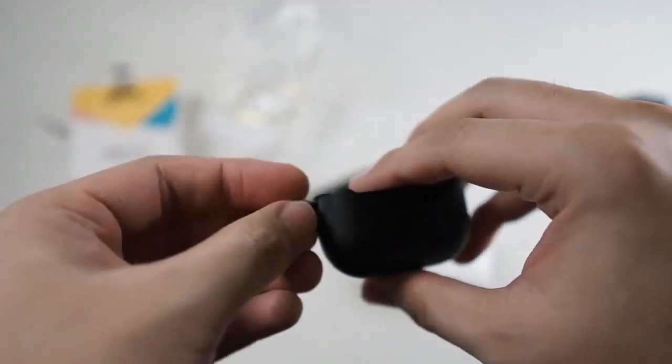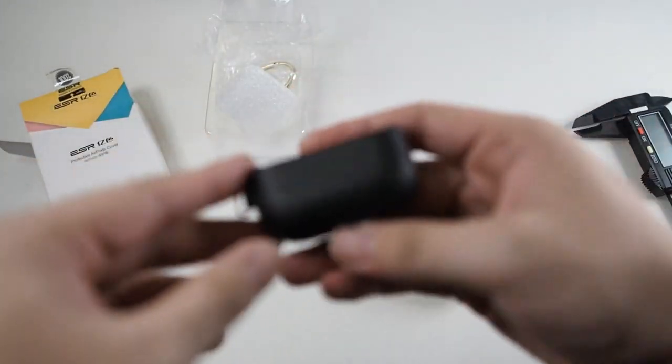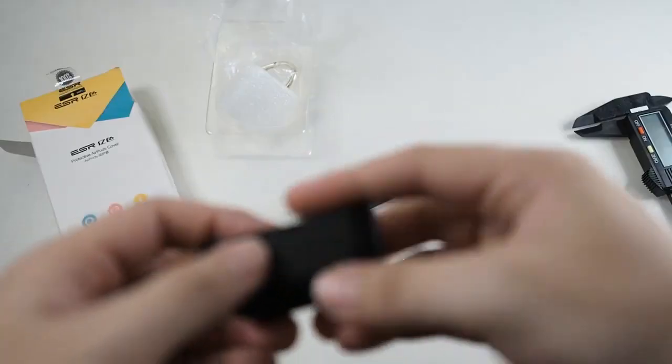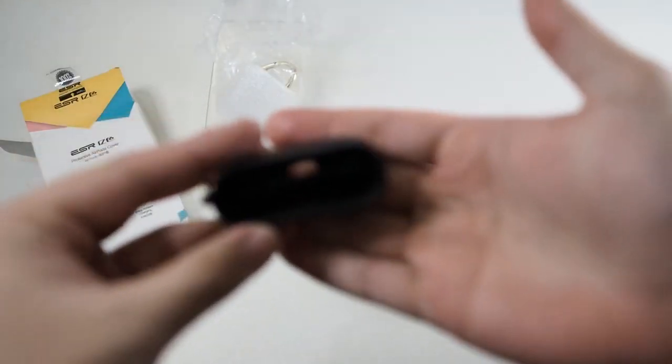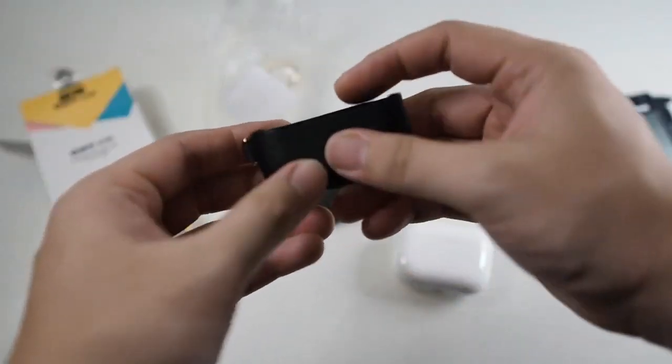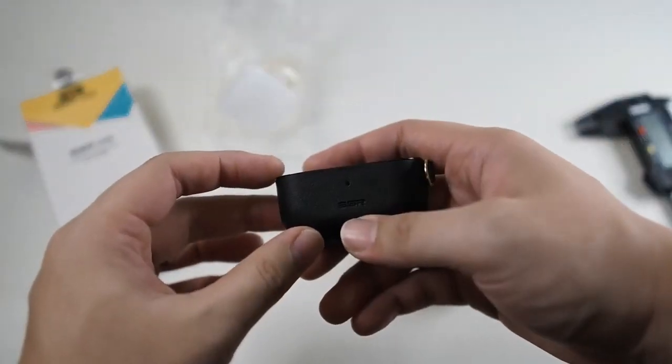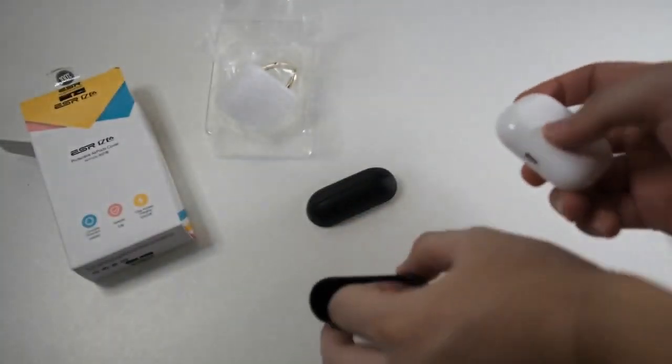On the bottom portion, you can see the ESR branding. There's a loop for the strap or for this metal ring. On the back, there's a small material portion. I'm not sure whether that helps pressing the button. There's also a hole in front for the charging status light.